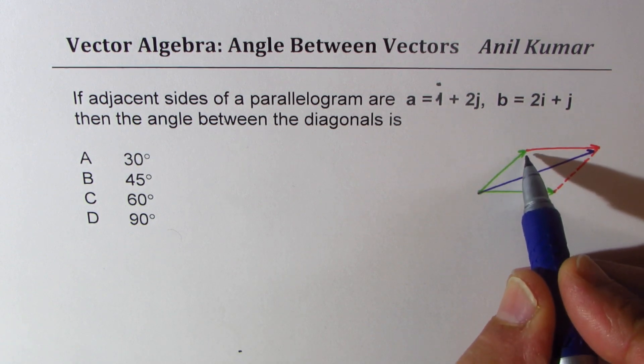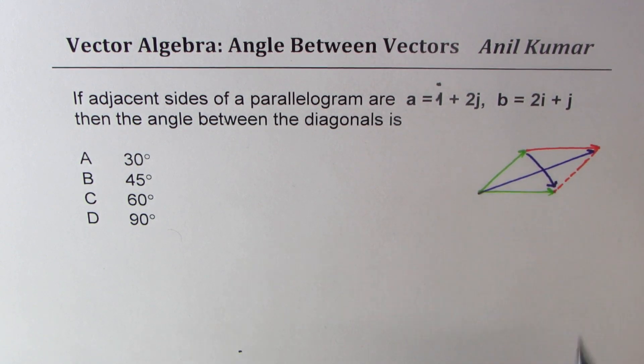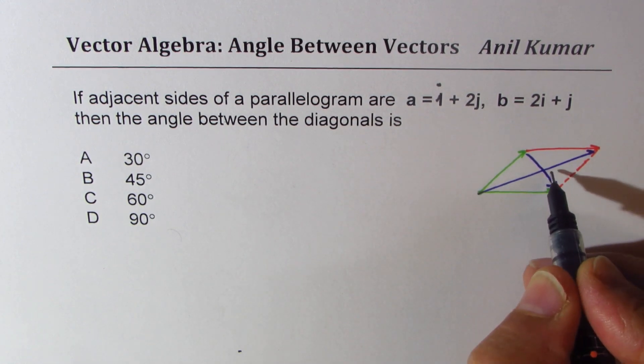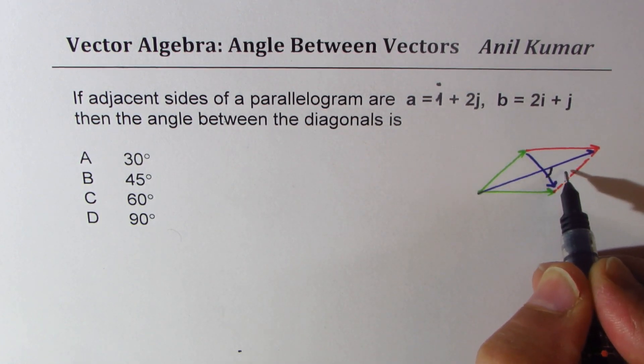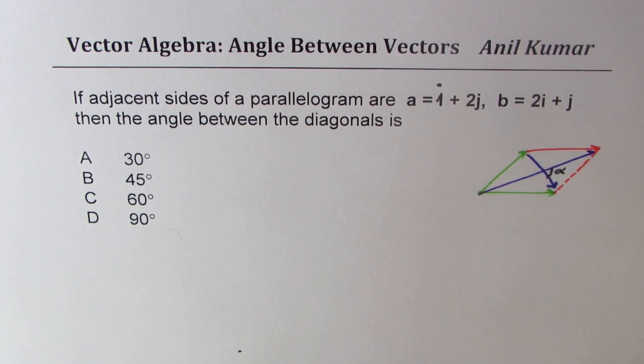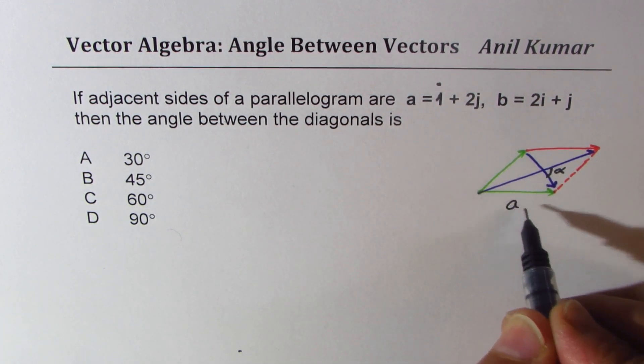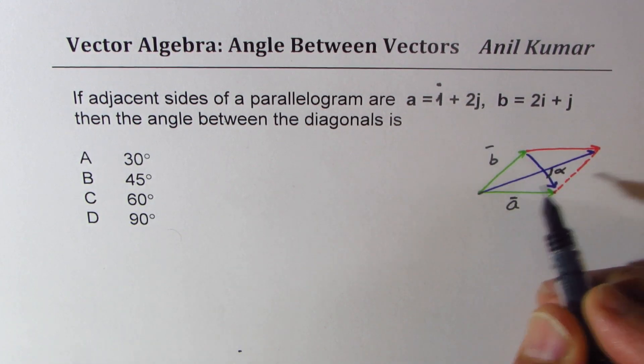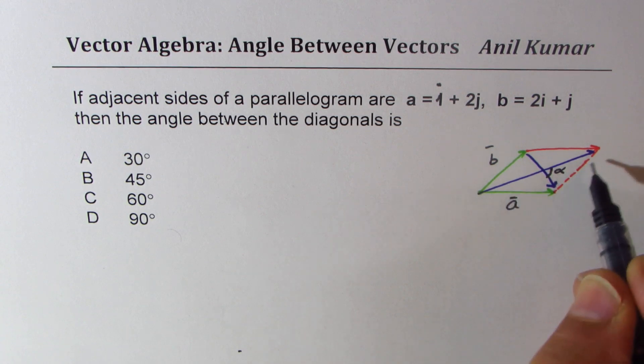What we need to find basically is angle between the diagonals, that is let's say this angle. Let's call it angle alpha. This is what we need to find. Now if one of the sides is a, the other one is b. In that case, what is that diagonal? So this is a, this is b.